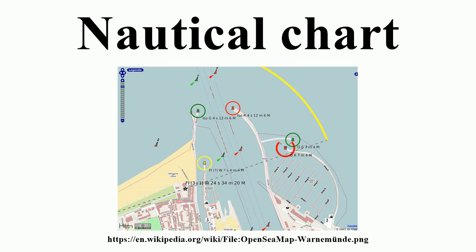The chart uses symbols to provide pilotage information about the nature and position of features useful to navigators, such as seabed information, sea marks and landmarks. Some symbols describe the seabed with information such as its depth, materials, as well as possible hazards such as shipwrecks. Other symbols show the position and characteristics of buoys, lights, lighthouses, coastal and land features and structures useful for position fixing. The abbreviation 'ED' is commonly used to label geographic locations whose existence is doubtful. Colors distinguish between man-made features, dry land, seabed that dries with the tide, and seabed that is permanently underwater, and indicate water depth.